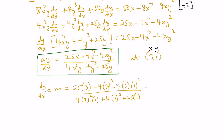This gives us 75 − 108 − 12 in the numerator, and 36 + 4 + 25 in the denominator, which works out to −45 over 65. Dividing top and bottom by 5, we get negative 9 thirteenths.